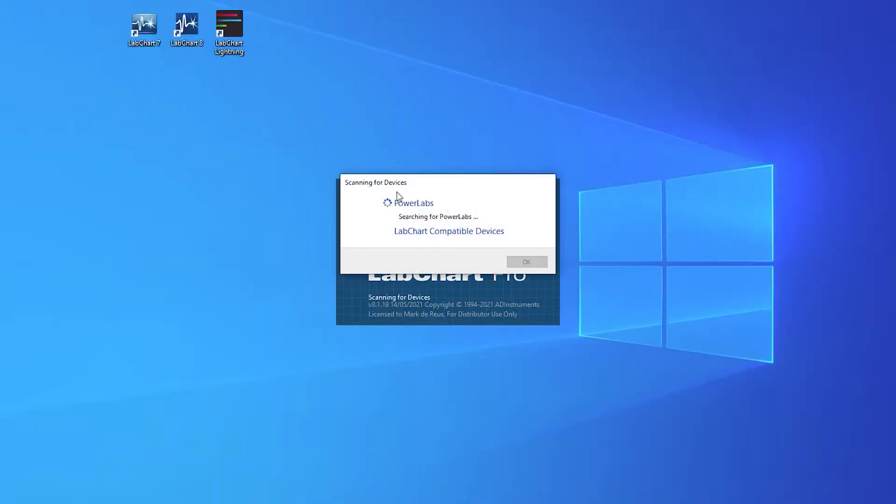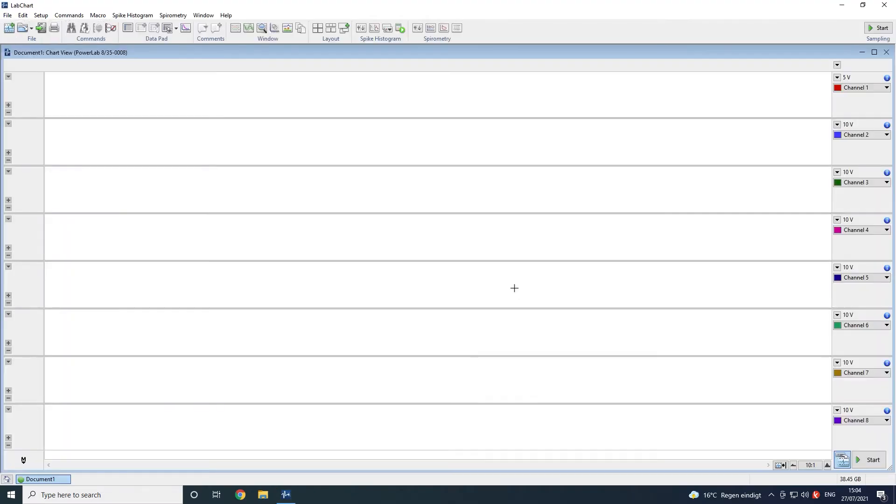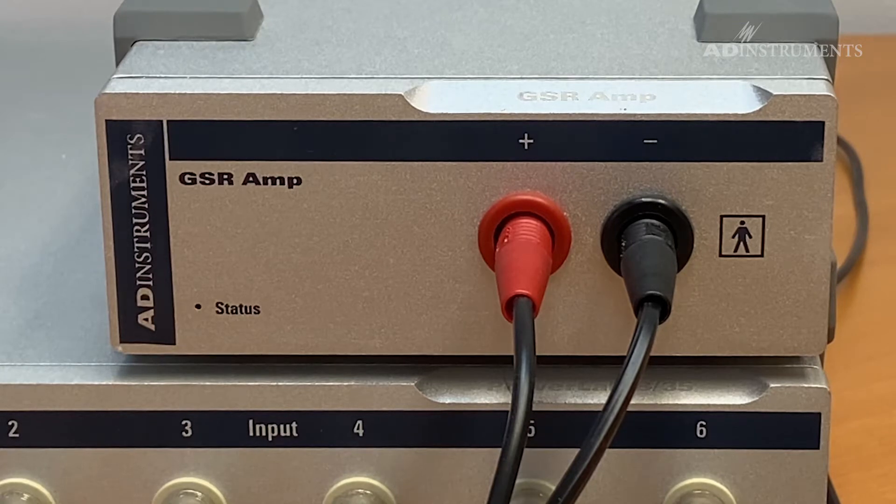Now start LabChart. When the GSR amp is correctly detected by LabChart, the status light will turn a solid green.